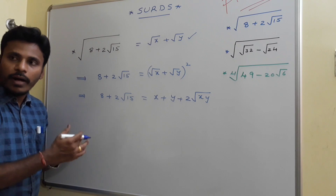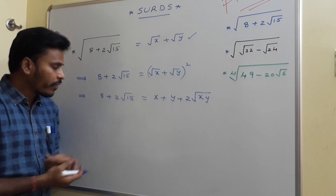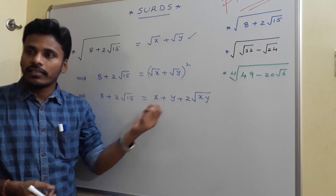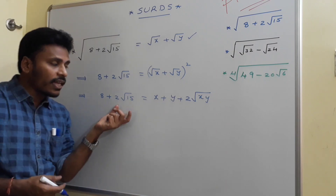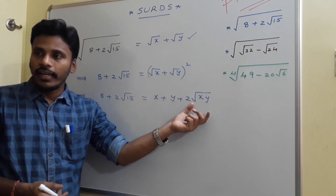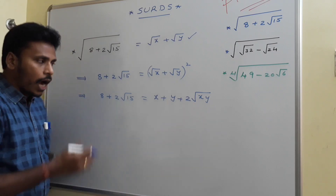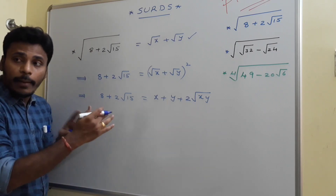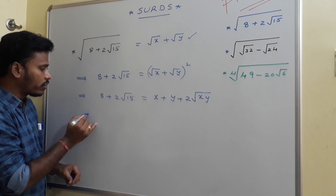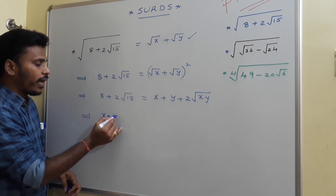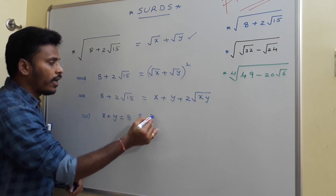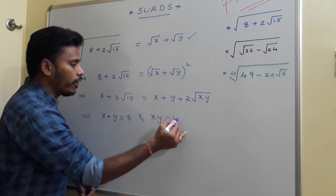Now compare both sides. The rational part on the left is 8, and on the right it is x plus y. The irrational part on the left is 2 root 15, and on the right it is 2 root xy. By direct comparison of rational and irrational parts, we get x plus y equals 8 and x times y equals 15.